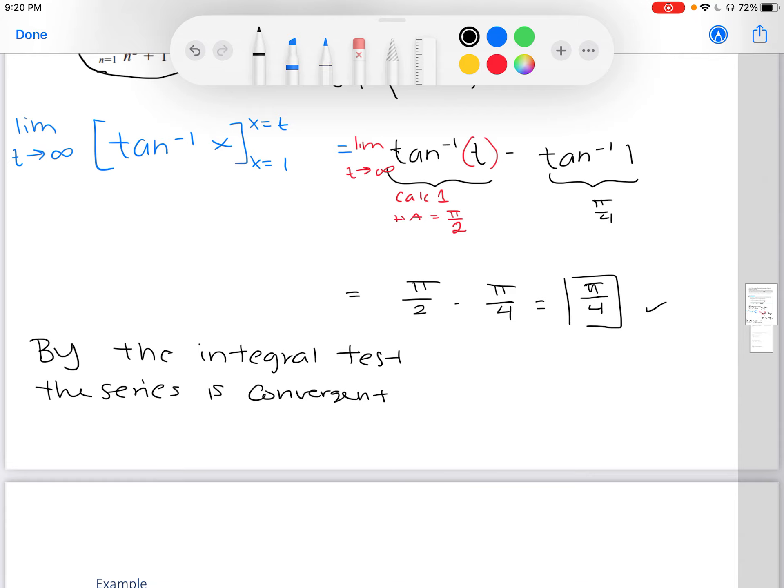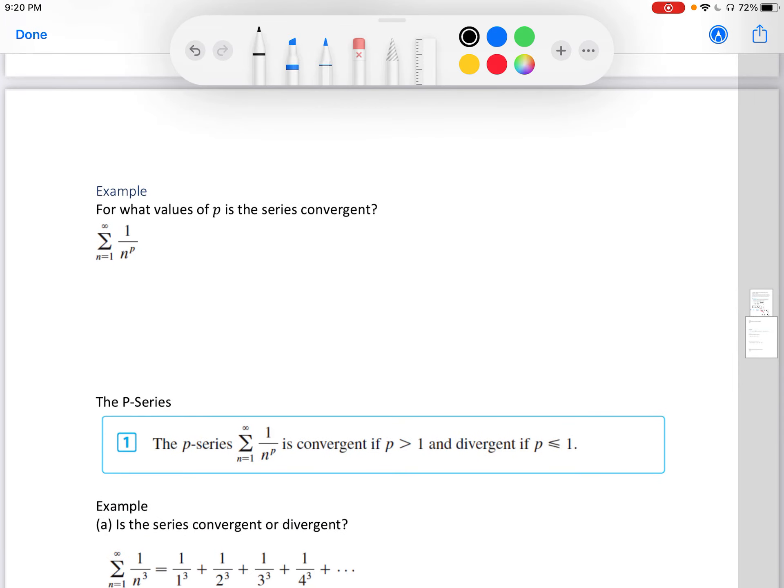Next problem. For what values of p is the series convergent? Let's consider cases where p is less than 0, if p is equal to 0, or if p is greater than 0. Now p is your exponent.